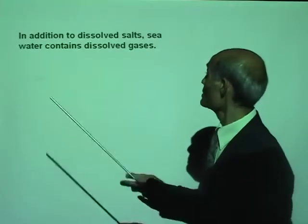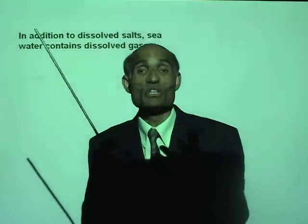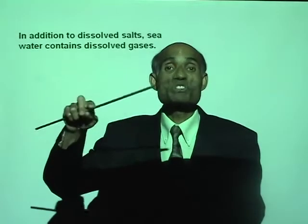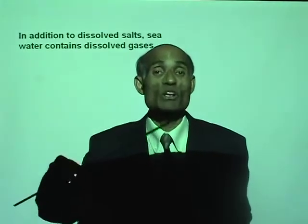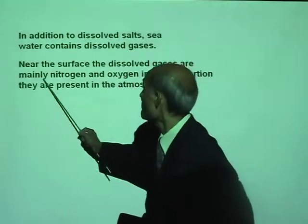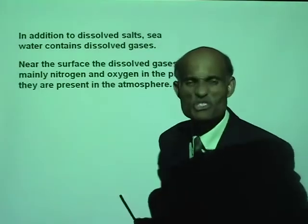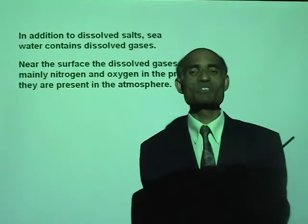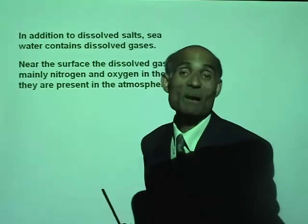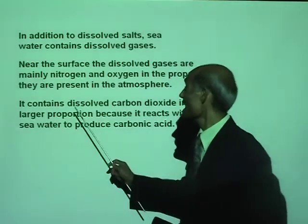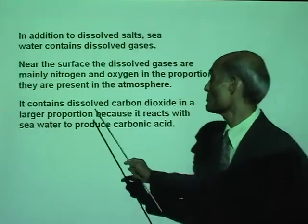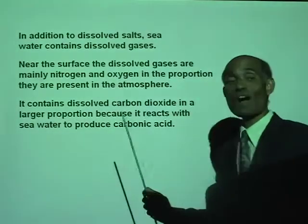In addition to dissolved salt, seawater also contains dissolved gases. Seawater immediately in contact with the atmosphere will have a lot of oxygen and nitrogen dissolved in it. Near the surface, dissolved gases are mainly nitrogen and oxygen in almost the same proportion as in the air — about 70% nitrogen and 21% oxygen. Seawater also contains dissolved carbon dioxide, which reacts with seawater to produce carbonic acid.